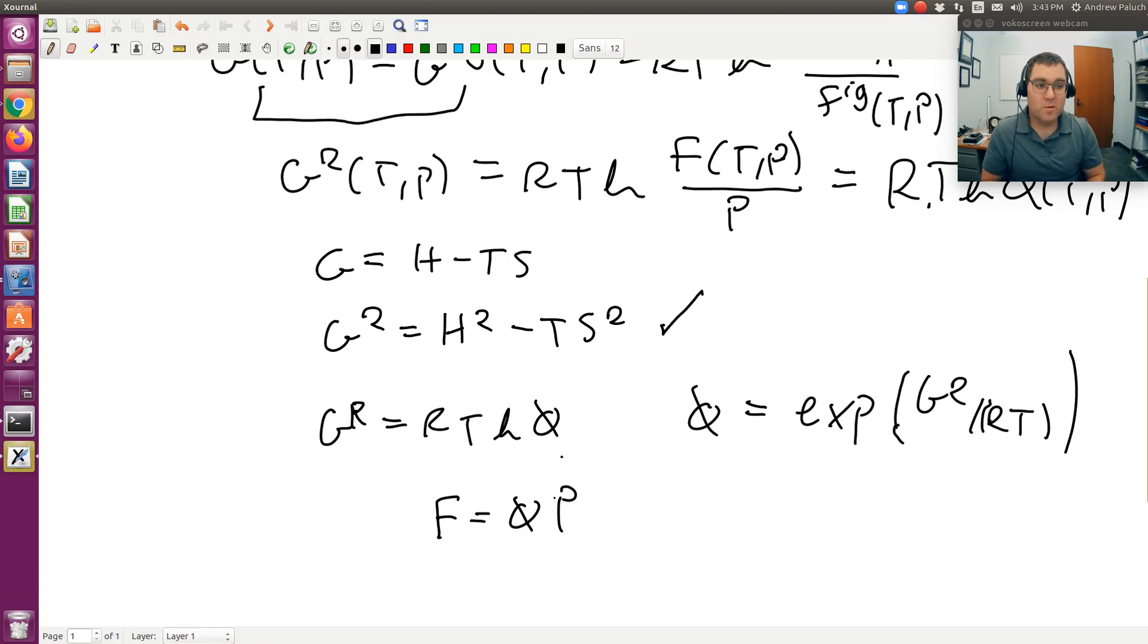Cool. So it's just remembering the relationship between GR and phi and F, and then also the relationship between GR, HR, and SR, so I can compute GR from the data provided in the table. See, I told you it'd be fun.